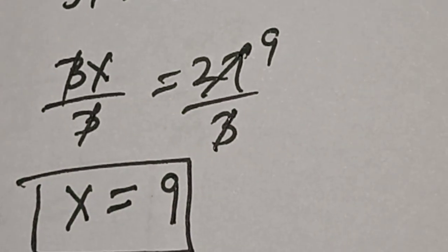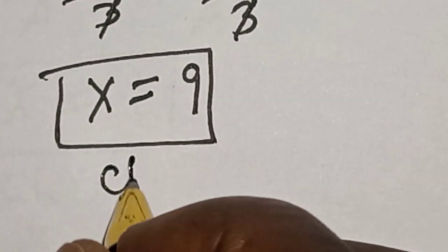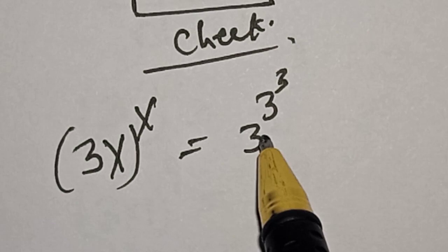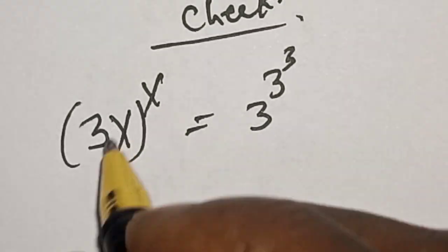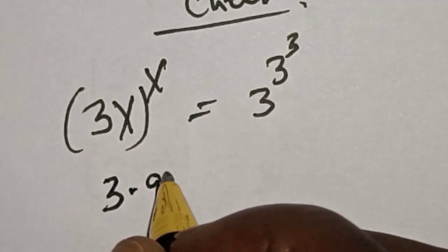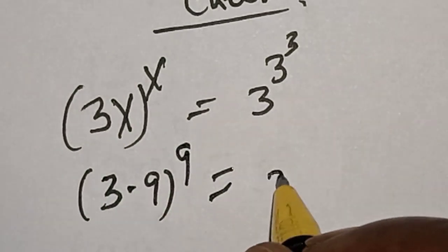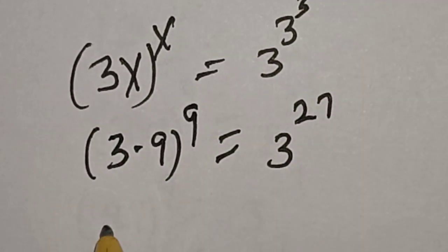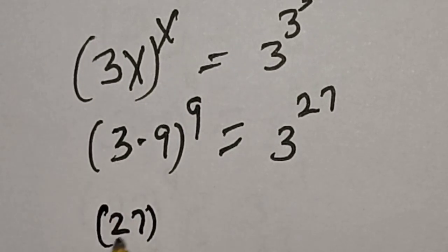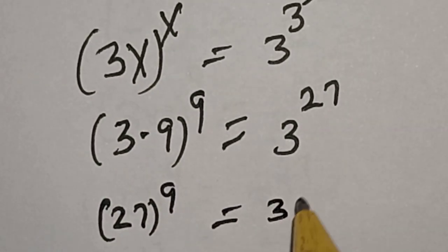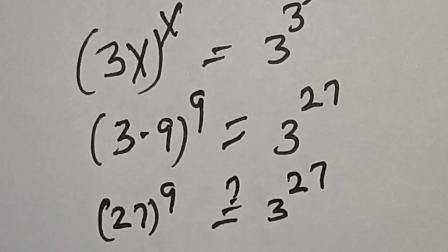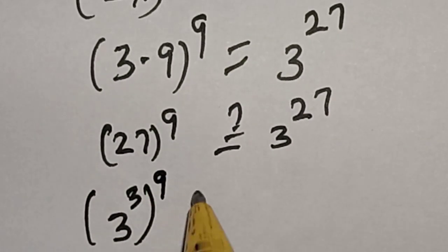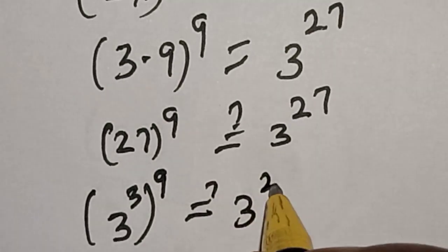Let's check to confirm if our answer is right. We have the given question: 3s raised to power s equals 3 raised to power 3 raised to power 3. Substituting s equals 9, we get 3 times 9 raised to power 9 equals 3 raised to power 3 raised to power 3. The left-hand side becomes 27 raised to power 9, and we need this to equal 3 raised to power 27. Rewriting: 3 raised to power 3 raised to power 9 must equal 3 raised to power 27.